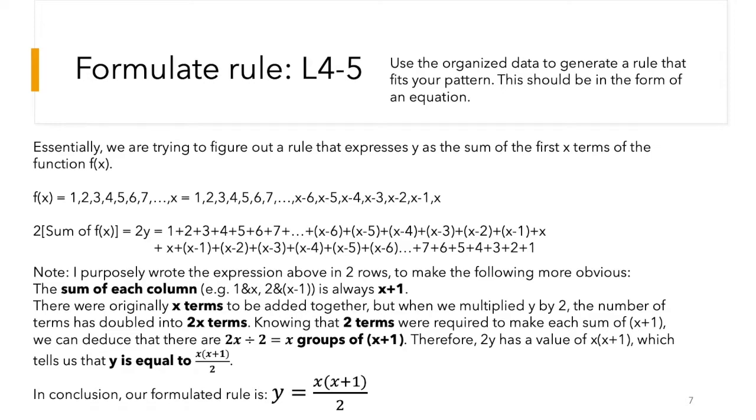Doubling that is going to make it easier, and you're going to see how easier it makes it later on. So doubling that, we've wrote the expression in two rows. The top row is y, and the second row is y again, so 2y. And you can realize that the sum of each column, for example, the first column is 1 and x, the second column is 2 and x minus 1, they all add up to x plus 1. So this is essentially how you would approach this problem, one way to approach it. There were originally x terms to be added together, but we multiplied y by 2, so the terms have doubled into 2x terms. So we realize that there are x groups of x plus 1, as for every two terms, you get x plus 1. Therefore, as you can see, our formulated rule is y equals x times (x plus 1) divided by 2.